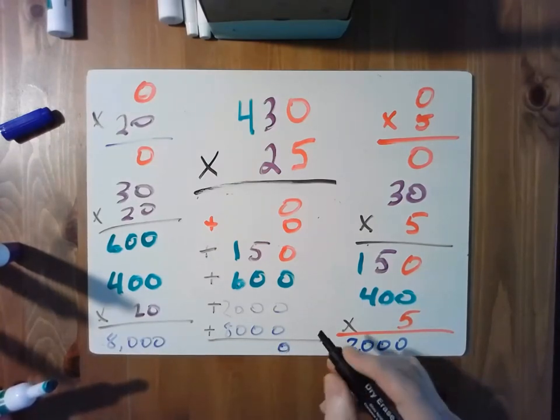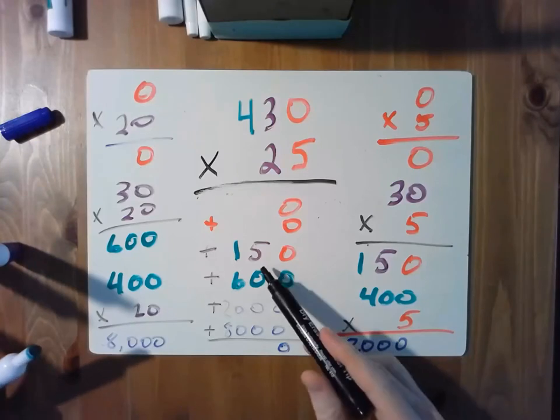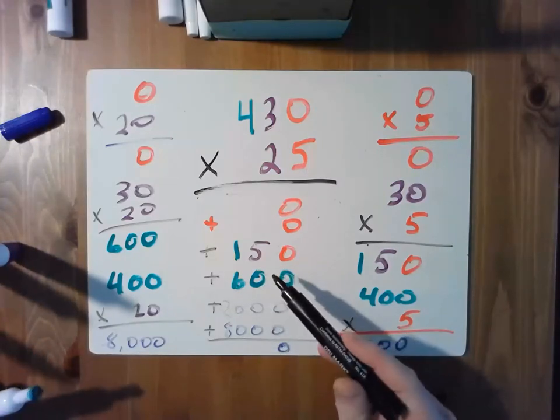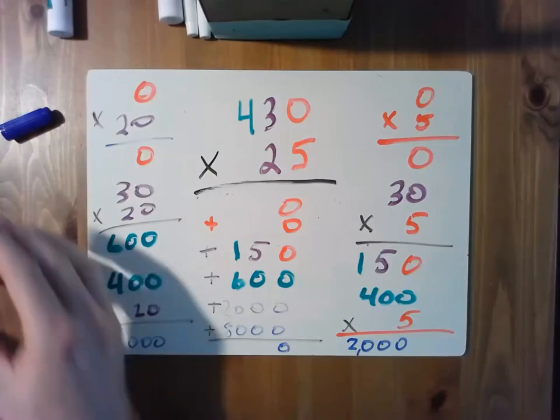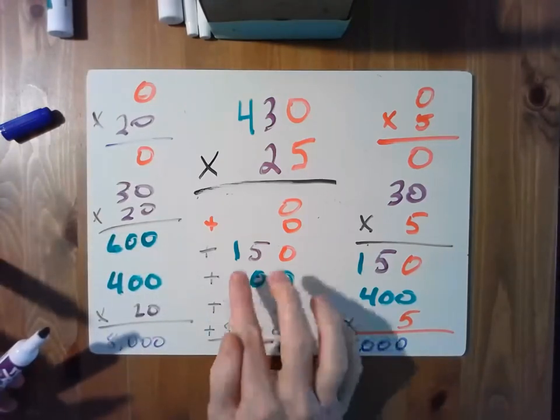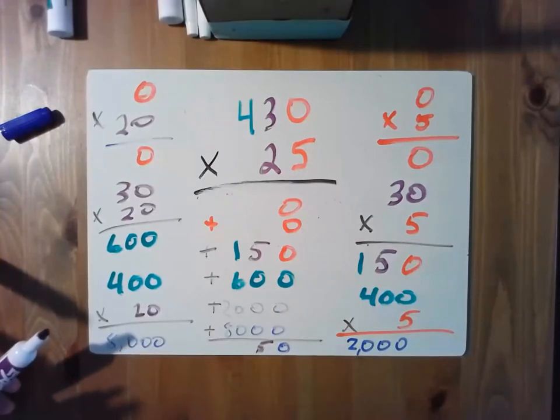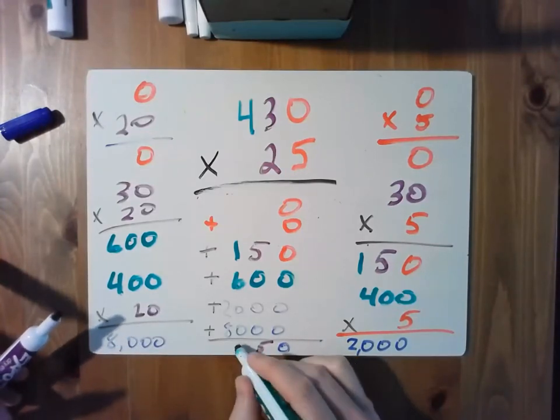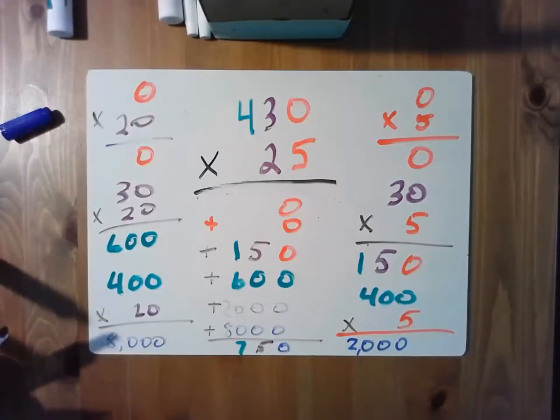A 5 in 150, otherwise all zeros in the tens column, so that's a 5 in the tens. A 6 and a 1 in the hundreds column, so that's 7. And then an 8 and a 2 in the thousands column, and so that's 10,000. And so our answer is 10,750.